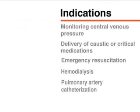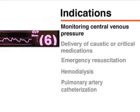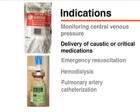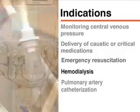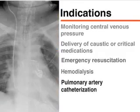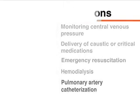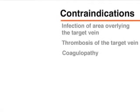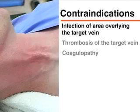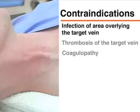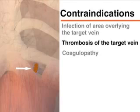The placement of a central venous line is indicated for the continuous monitoring of central venous pressure, the delivery of critical or caustic medications, for emergency resuscitation, hemodialysis, and pulmonary artery catheterization. General contraindications include infection of the area overlying the target vein and thrombosis of the target vein.